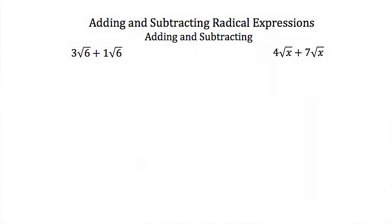Now that we know what like radicals are, let's talk about adding and subtracting radical expressions that have like radicals. Here we have 3 square roots of 6 plus 1 square root of 6. They're both square roots and they both have a 6 underneath. So these have like radicals. Imagine that y equals the square root of 6, and substitute y in — this would be 3y plus 1y.